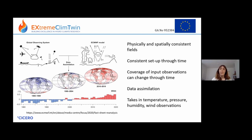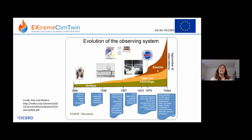The coverage of the input observations does change through time. The process of combining the observations with the model is called data assimilation. There are various different ways of doing this — different algorithms of different complexities. You assimilate variables like temperature, pressure, humidity, and wind. The observing system has evolved through time: back in 1890 there were just surface observations, then weather balloons started to be used, and then around the 1970s satellite observations were incorporated.